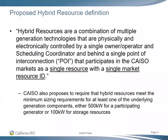John asked whether the definition of 'multiple generation technologies' includes configurations like a combined cycle plant with a steam turbine and combustion turbine. Chris confirmed that a combined cycle would not qualify as a hybrid resource under this definition — it would be considered a single participating generator needing to meet the 500 kW requirement. The intent is more about multiple different fuel sources, such as the traditional storage-and-solar concept, rather than multi-stage generators of the same fuel type.